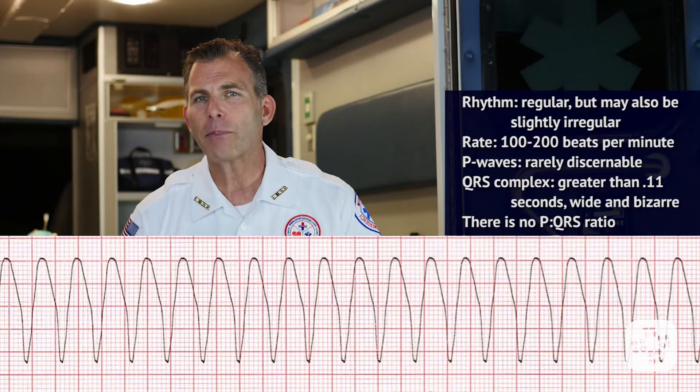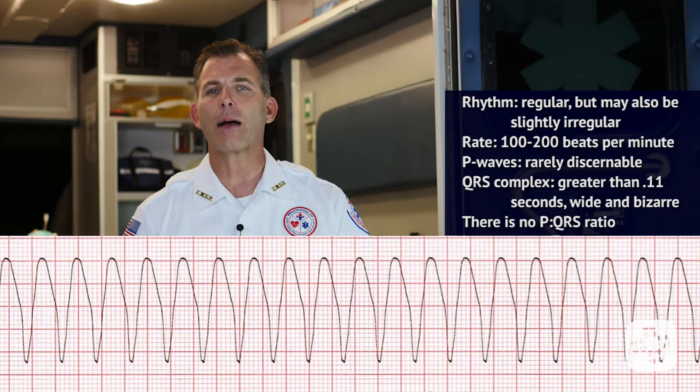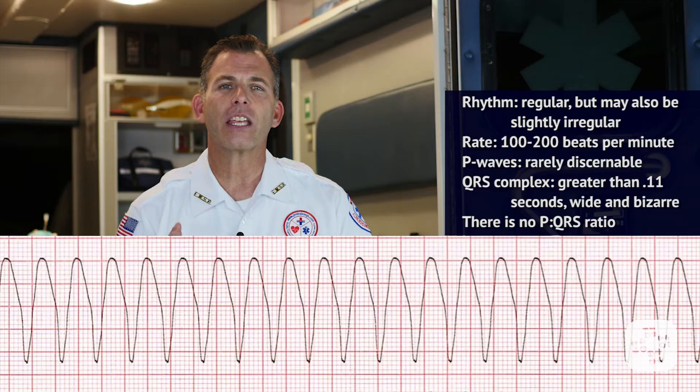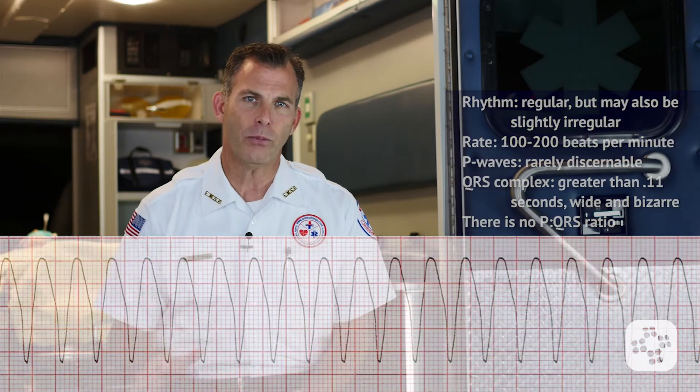The main problem with this type of fast wide complex tachycardia is that hemodynamics are unstable. The heart rate is so fast that it inhibits the atrium from pre-filling and pre-loading the ventricles prior to their next contraction.